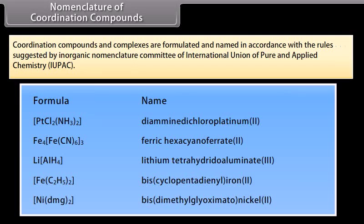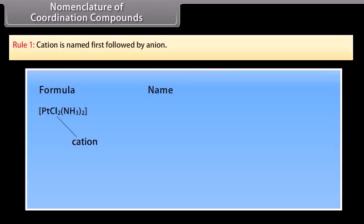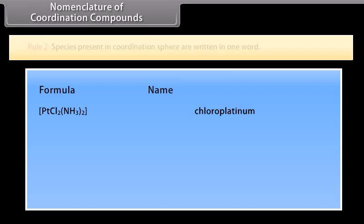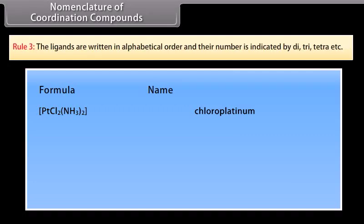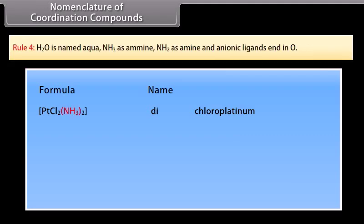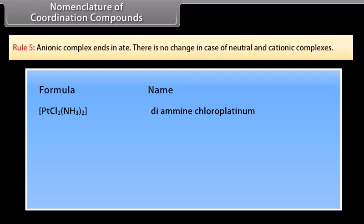Nomenclature of Coordination Compounds: Coordination compounds are named in accordance with rules suggested by the Inorganic Nomenclature Committee of IUPAC. Rule 1: Cation is named first followed by anion. Rule 2: Species present in the coordination sphere are written in one word. Rule 3: Ligands are written in alphabetical order and their number is indicated by di, tri, tetra, etc. Rule 4: H2O is named aqua, NH3 as amine, NH2 as amine, and anionic ligands end in -o. Rule 5: Anionic complex names end in -ate; there is no change for neutral and cationic complexes.